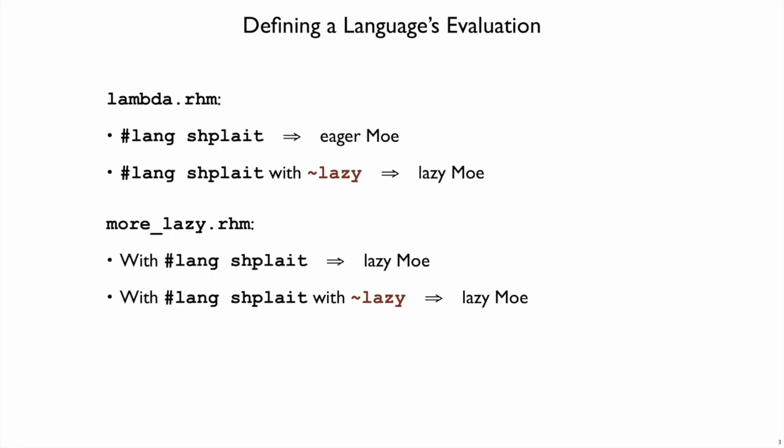In the case of lazy evaluation in our more lazy interpreter, it doesn't matter whether you run it in the eager or lazy variant of shplait. We always get a lazy variant of mo, and that's because we implemented laziness explicitly.